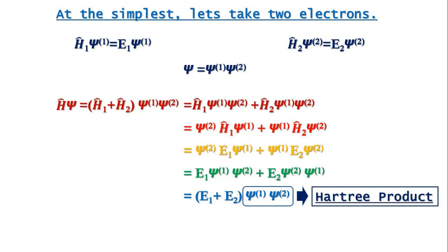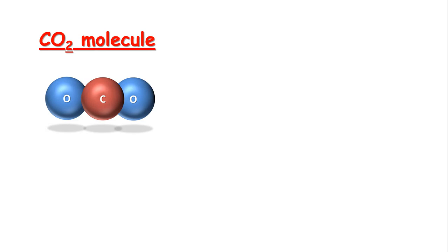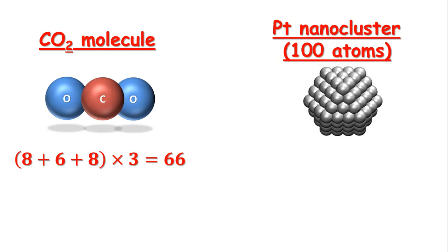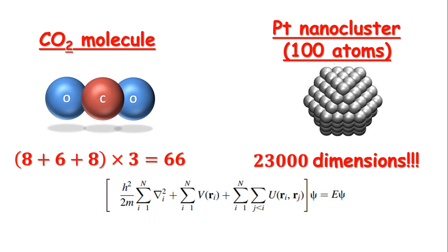Up to now we are only talking about molecules and simple systems. Let's take a CO2 molecule. In CO2 you have (8 + 6 + 8) × 3 = 66 dimensions. So just a CO2 molecule — not a bulk system, not a very big system — and you already have to deal with 66 dimensions. If you take a platinum nanocluster of 100 atoms, you will have to deal with nearly 23,000 dimensions. Not a joke. The problem gets worse when you have to deal with the interaction term on top of that. The situation gets really messy.